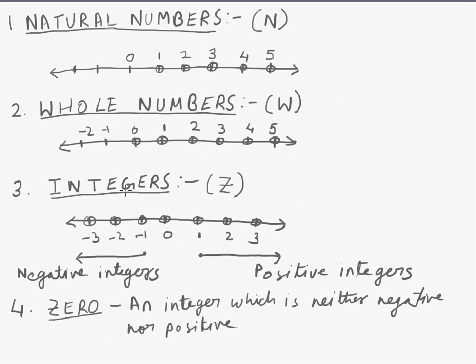Now we will start defining the various types of numbers. First of all, we learned what is natural number. All the natural numbers are represented by letter N. On a number line, we can see that 1, 2, 3, 4, 5, these numbers are circled.